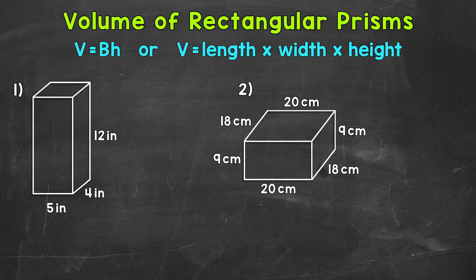Let's jump into our examples here, starting with number one, where we have a rectangular prism with a base with dimensions of 5 inches and 4 inches, and then a height of 12 inches. We'll start by writing out our formula. So volume equals length times width times height.